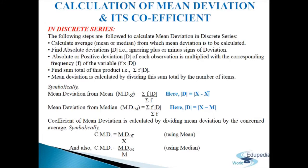First step: we have to calculate the average — mean or median — from which mean deviation is to be calculated. Second step: find out absolute deviation d, ignoring the plus or minus sign. Third step: absolute deviation d of each observation is multiplied with the corresponding frequency f to get f·d. Next step: find out the sum total of the product, that is sigma f·d.